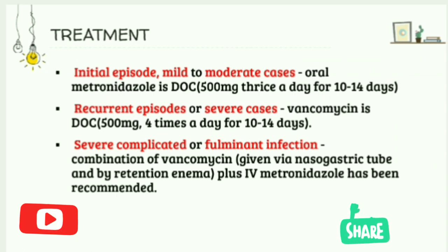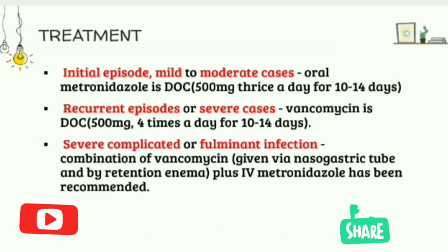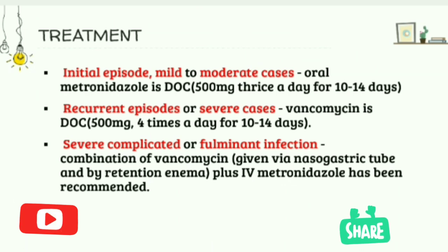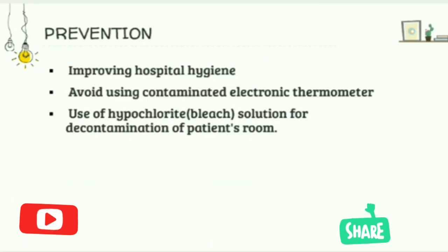For the initial episode or mild to moderate cases, 500 mg oral metronidazole is the drug of choice, given three times a day for 10 to 14 days. For recurrent or severe cases, vancomycin 500 mg four times a day for 10 to 14 days is used. For severe complicated or fulminant infection, the combination of vancomycin via nasogastric tube or retention enema plus IV metronidazole is recommended.